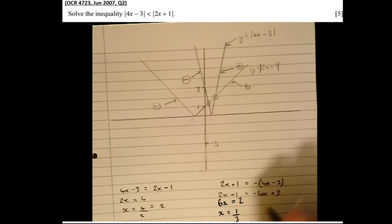We've got two roots, 2 and one third. So the lower of the 2 is a third, the higher of the 2 is 2.